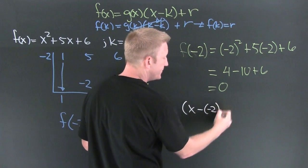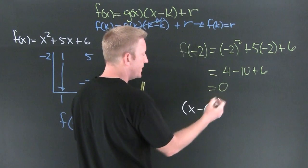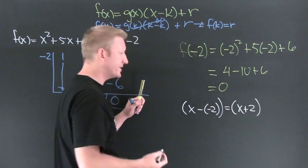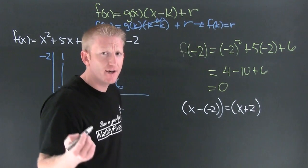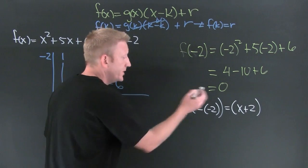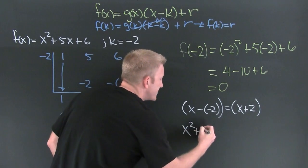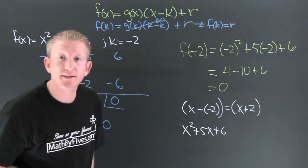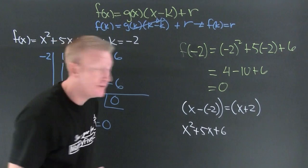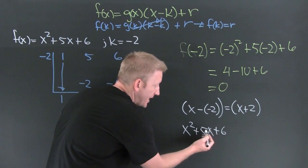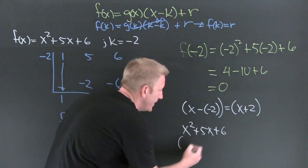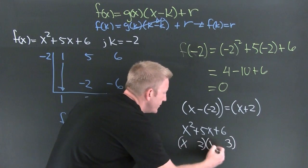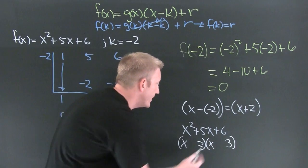Unfortunately for us, we have a factorable example. Let's check it. If x squared plus five x plus six is our polynomial, then can we factor that? We're looking for the factors of six that add to be five. You got that: three and two. X and x, the signs are the same, and they're both positive.